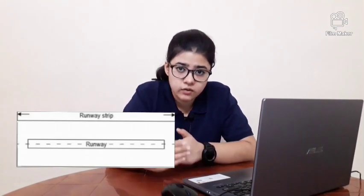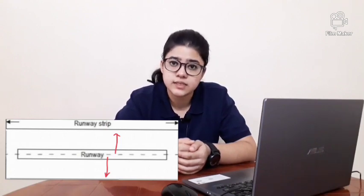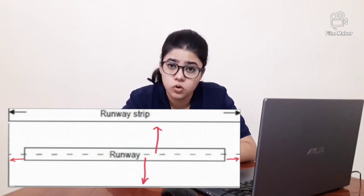Next, we will be talking about the runway strip. It is an area including the runway and the stopway used to reduce the risk of damage to an aircraft during takeoff or landing operations, and also to reduce risk of damage in case of running off the runway. It extends on both sides of the centerline to a distance of 140 meters and to a distance of 60 meters from the end of the runway threshold or the stopway. Hope I could help you with the difficult terminologies related to ICAO Annex 14. If you like our work, do like, share, and subscribe, because your support is our motivation.